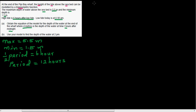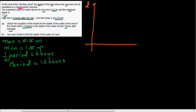Let's draw the graph and then write the equation. On the y-axis we have d for the depth of water, and on the x-axis we have t for time — this is time after midnight.